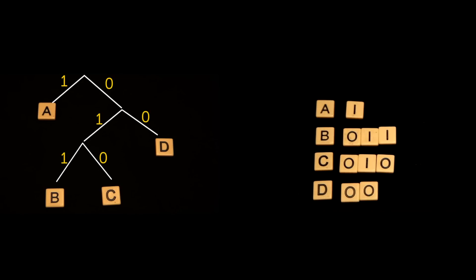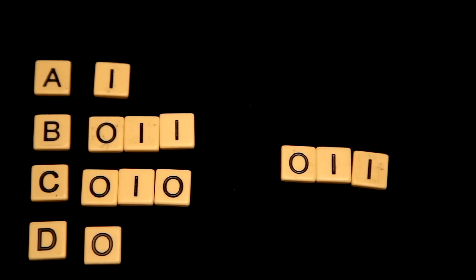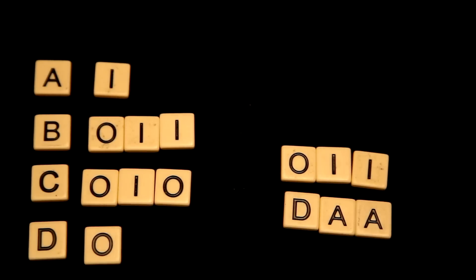This is now known as Huffman coding, and for examples of the following type, you cannot beat it. Go ahead and try. For example, if you shorten the code for D to just 0, then a message 011 could perhaps mean D, A, A, or maybe just B.